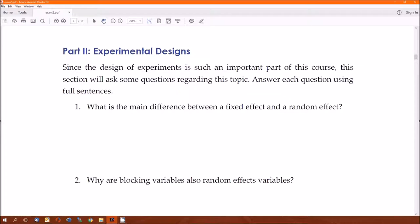And here we are in part two, experimental designs. Number one: what's the main difference between a fixed effect and a random effect? In a fixed effect, you care about comparing the effects to the levels in the variable. In a random effect, that's not the case. In a random effect, you're usually just adding this variable to describe some of the unexplained variation to increase the power of the ANOVA test.